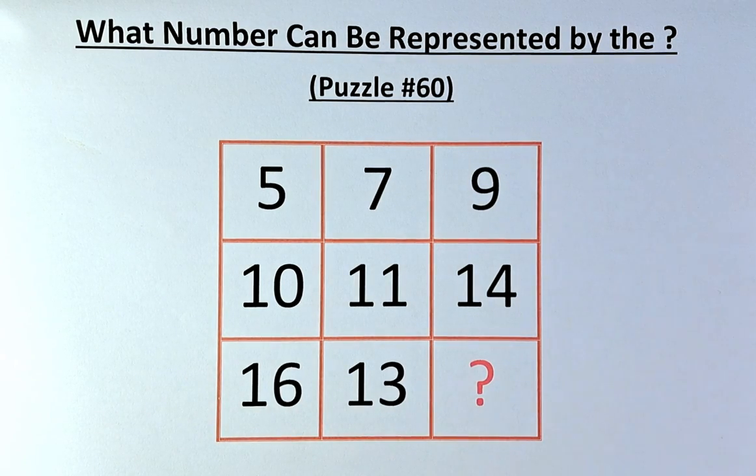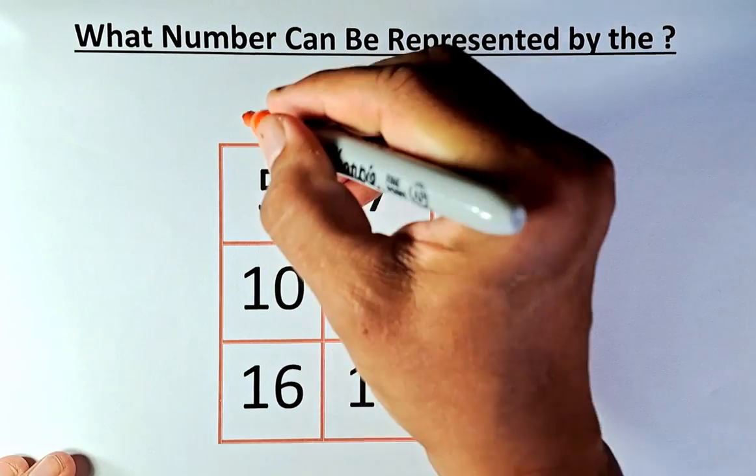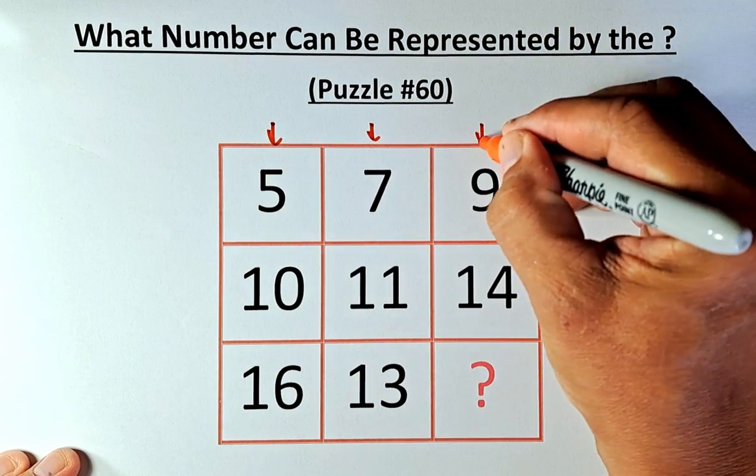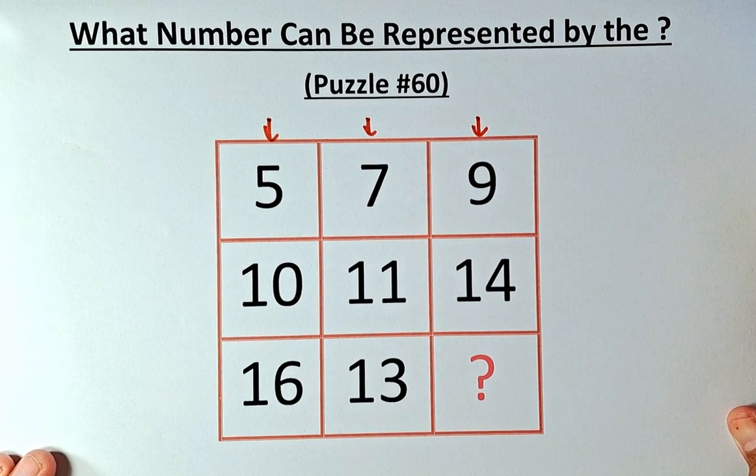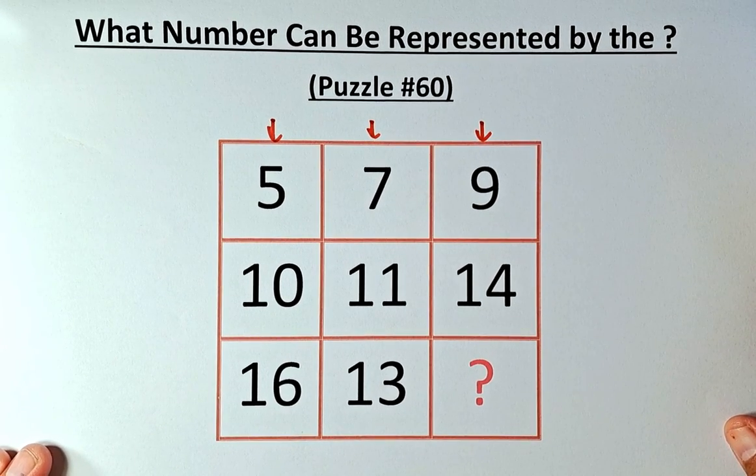So to do this, the actual answer is we are working in terms of columns. So we need to work such a way that 5, 10, 16, 7, 11, 13 and 9, 14 and the question mark.